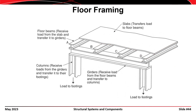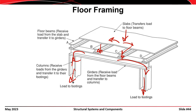Here's another similar example. Load is introduced on the deck, the deck carries that load to these floor beams or joists, they carry it into the girders, the girder receives the load and carries it to the columns, and the columns carry the load to the footings. What's different from the last slide is that here the joists or floor beams are rolled I-sections instead of open web steel joists, and these floor beams are supported on top of the girders, giving a different elevation for the top of steel for the floor beams versus the girders.